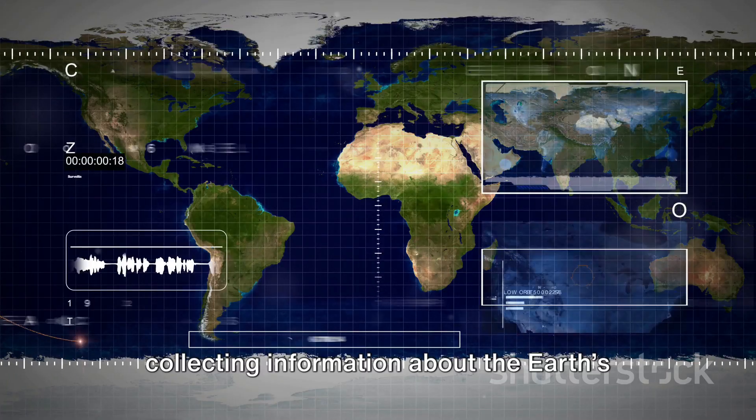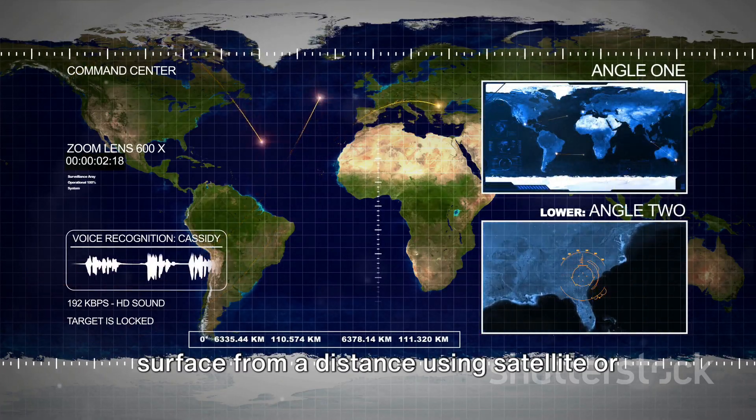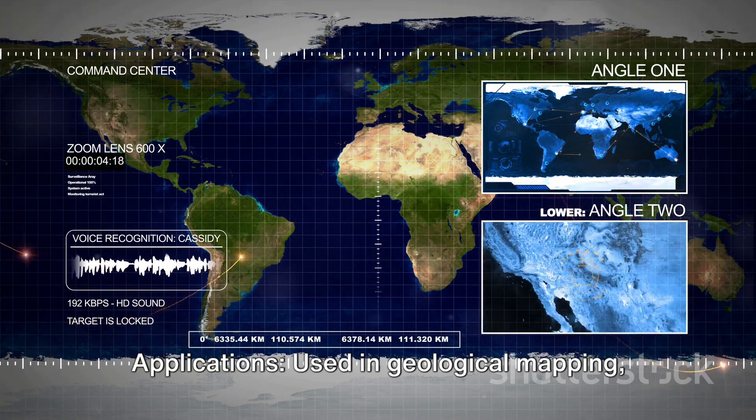Remote sensing. Principle: Involves collecting information about the Earth's surface from a distance using satellite or aerial platforms.